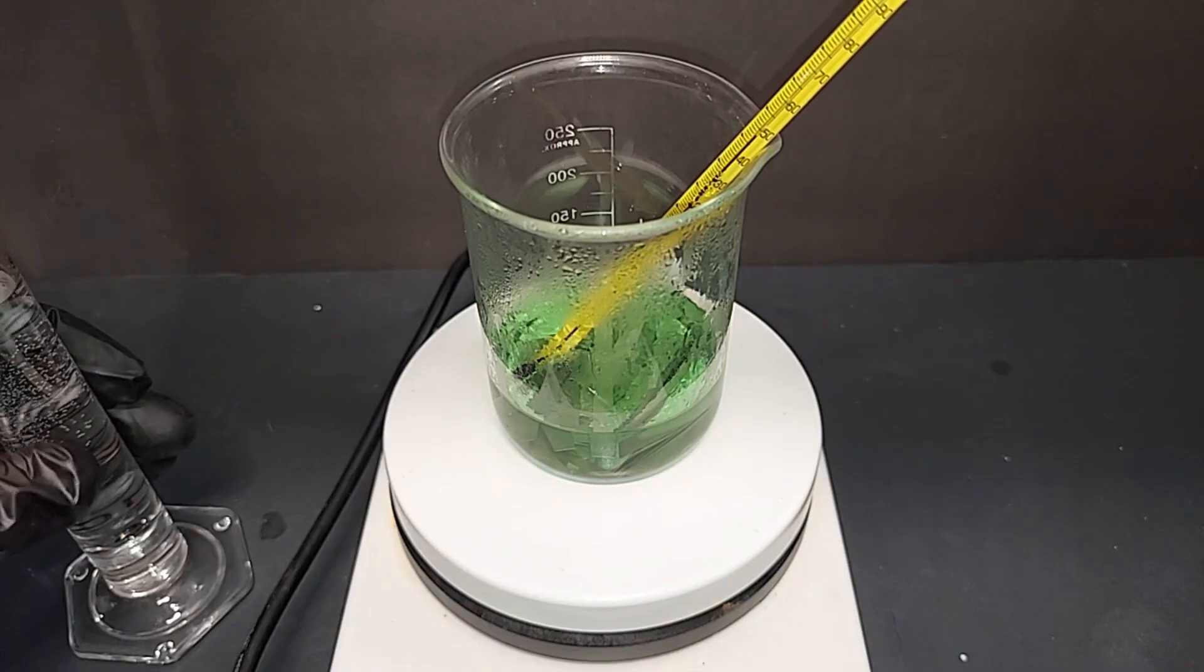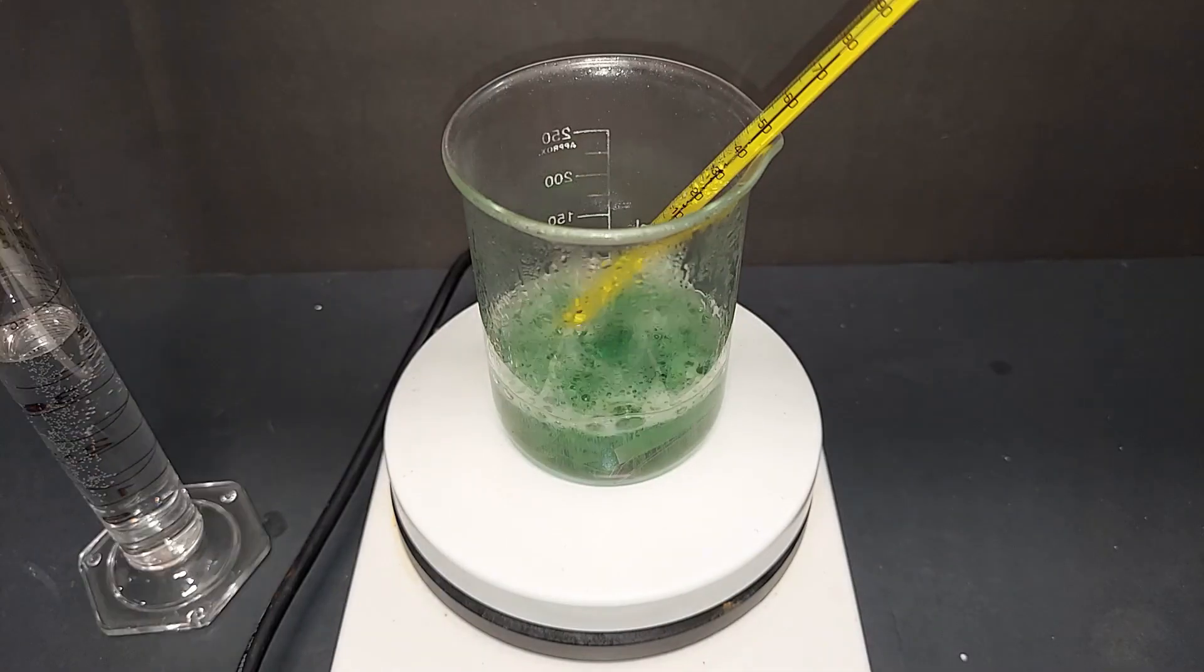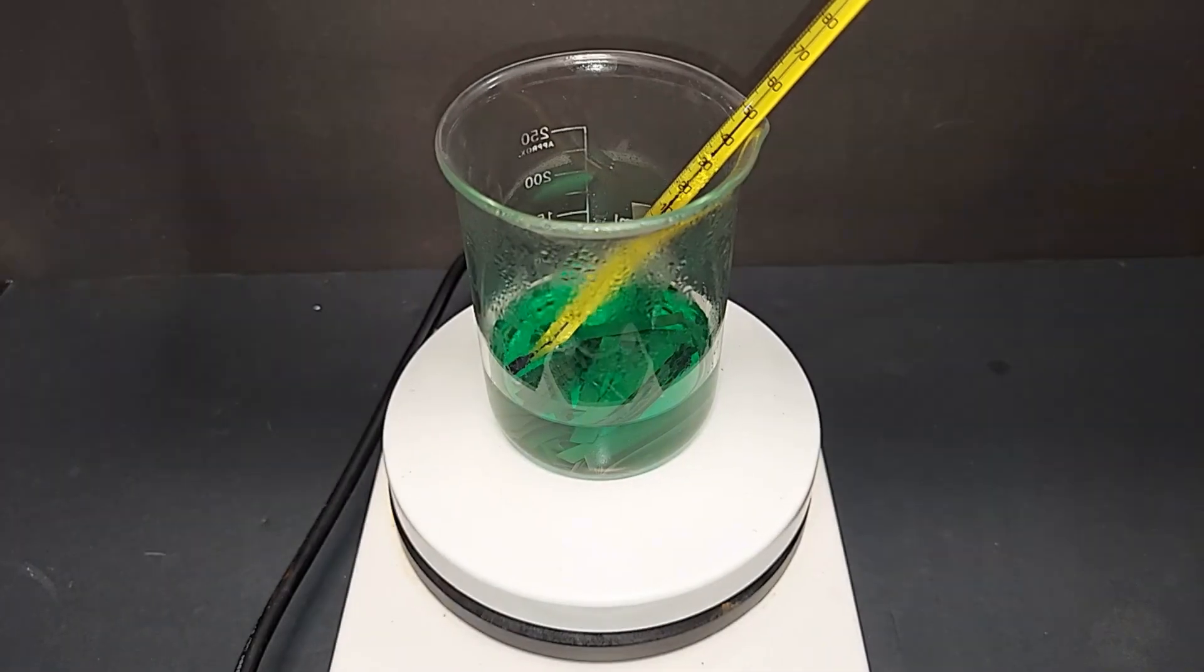I added about 15 milliliters total of the 20% and it helped—it's darker green meaning the nickel is more dissolved and we're getting some nickel chloride. But that's not going to be enough, so I'm going to add here approximately 5 milliliters of additional 30% hydrochloric acid.